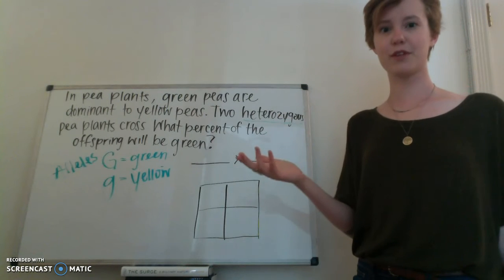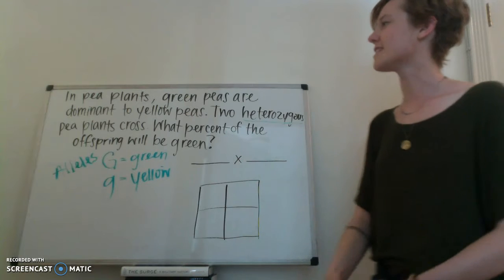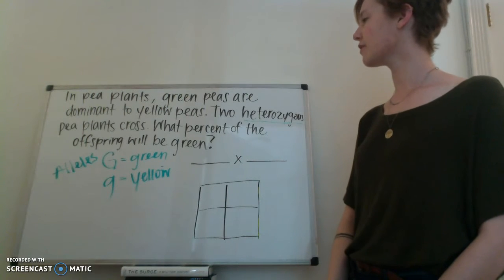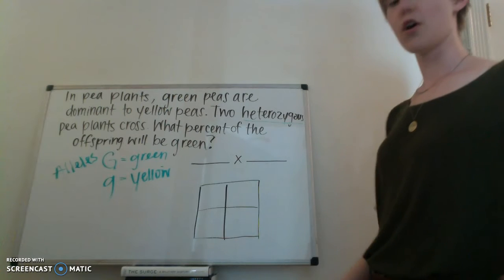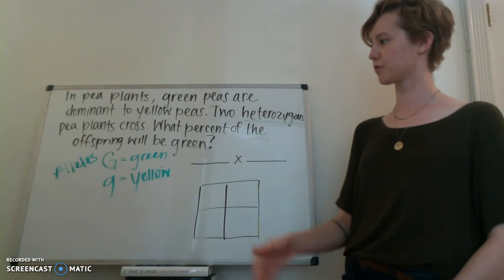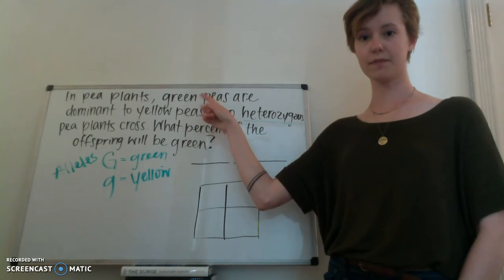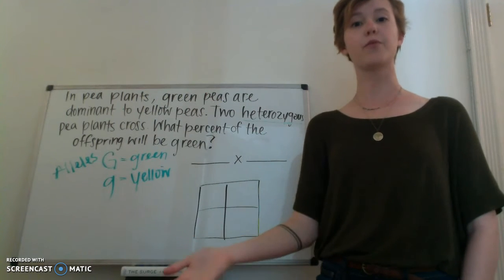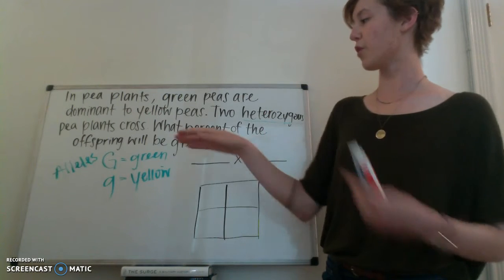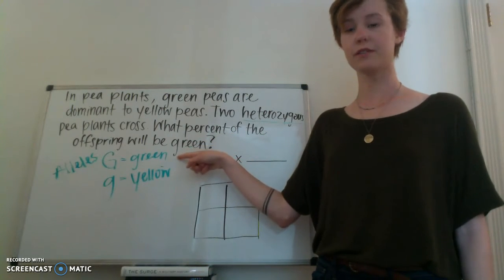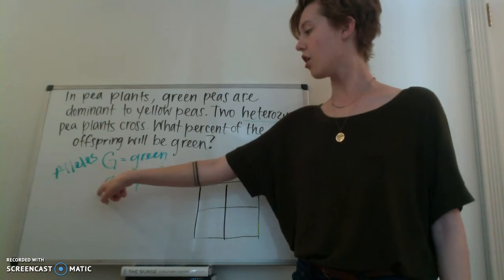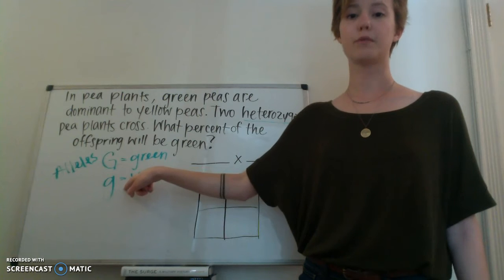So let's read through the problem one more time. It says, in pea plants, green peas are dominant to yellow peas. Two heterozygous pea plants cross. What percent of the offspring will be green? So just to recap, we looked at this first sentence here. It told us about the different ways that pea plants can look, or our alleles. And we wrote our alleles here as abbreviation. And we gave a capital letter to our dominant trait, a lowercase letter to our recessive trait.